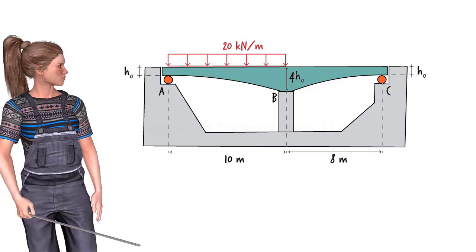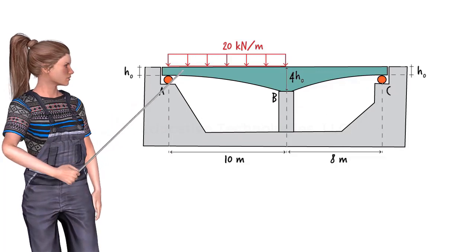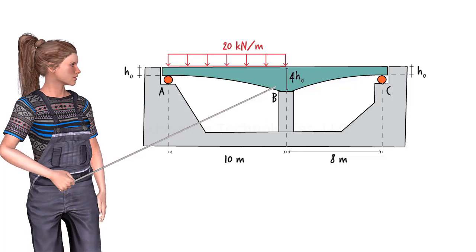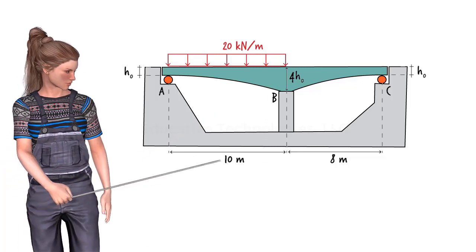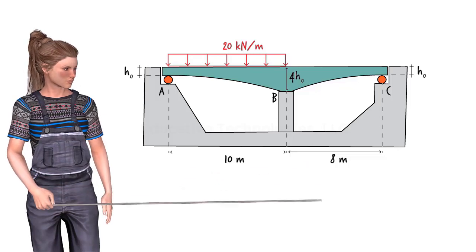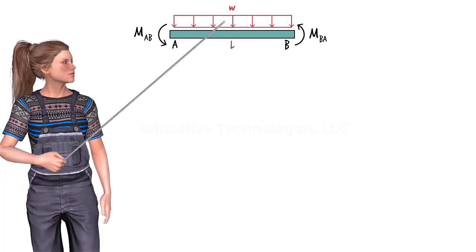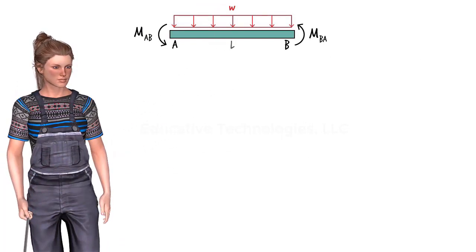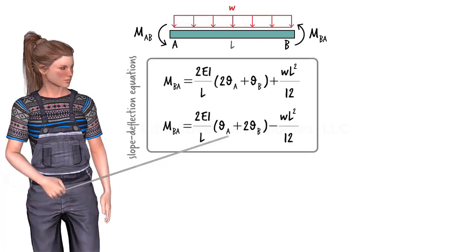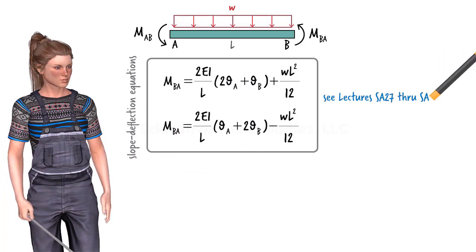The height of the beam's cross-section at each end is denoted by H0. So the height at the middle support would be 4H0. The continuous beam consists of two segments. AB is 10 meters long and BC has a length of 8 meters. For a typical beam segment subjected to a uniformly distributed load of W, assuming a constant moment of inertia, the slope-deflection equations can be written as shown. If you are not familiar with the slope-deflection formulation, please see our previous lectures on this topic.